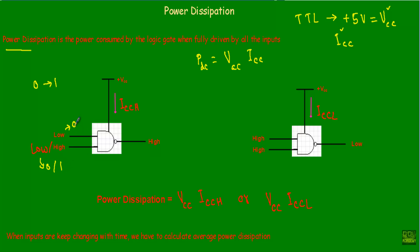As we have at least one zero at the input side, our output will be at logic one. Since the output is at logic one, the current drawn by this logic gate when the output is at the high state is ICCH. Therefore I can calculate power dissipation as VCC × ICCH.